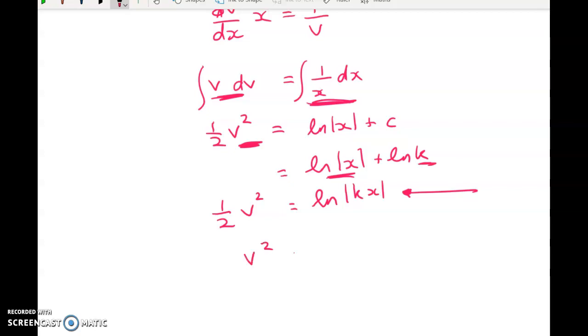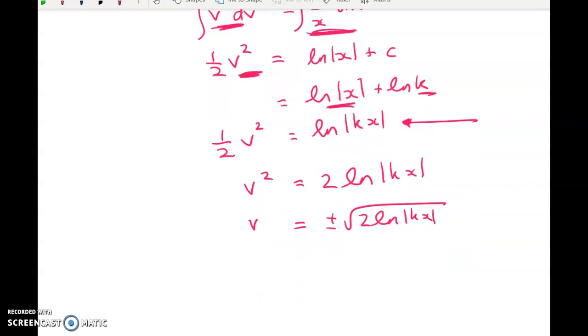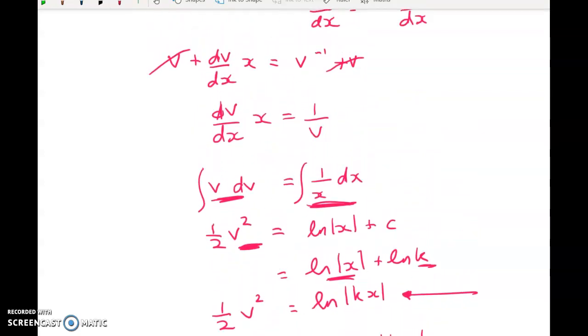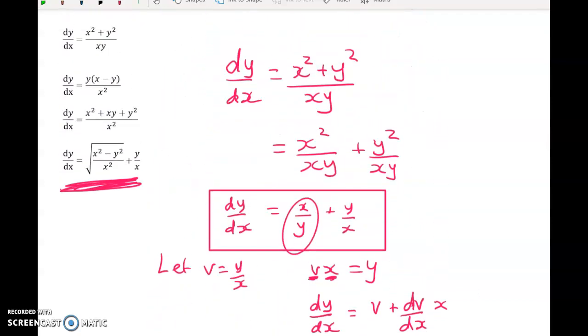I've got V squared is equal to two times the natural log of Kx. And now I'm going to get an expression for V. So V is equal to plus or minus root two times log of Kx. And it's time to switch out the V and pop in y over x. So y over x is equal to this. And my final expression for y is equal to this. So you can see that we're already starting to get very used to doing that substitution. And it really brings us back to a very straightforward level three merit-y kind of differential equation. So that's the first one done.